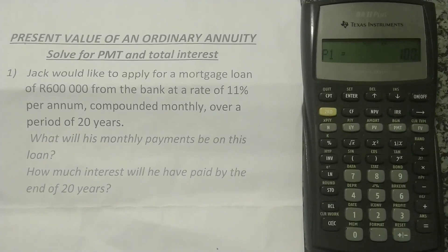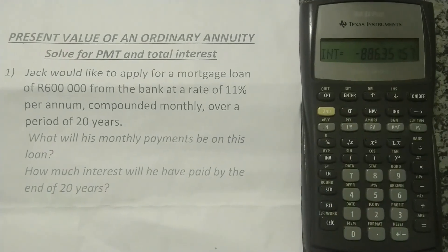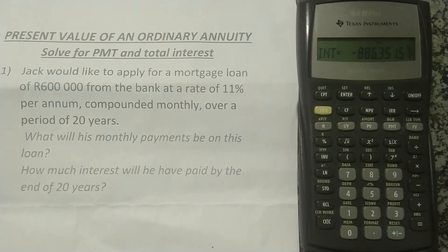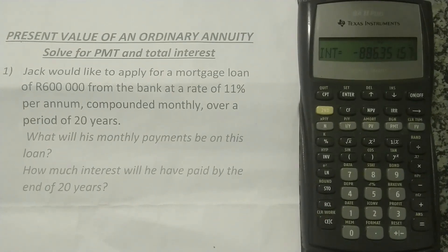Pressing down again takes us back to period one. We've answered both questions: monthly payments of R6,193.13 and total interest of R886,000. I hope this has made sense. If you've gained value from this lesson, please subscribe to our channel, like this video, and share it. Till next time — cheers!